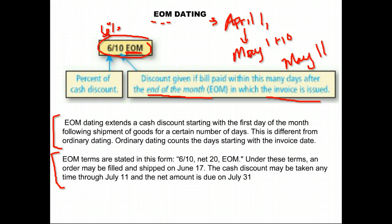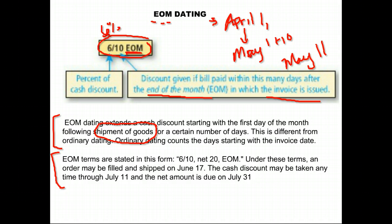End of month dating extends a cash discount, giving you more time starting within the first day of the month following the shipment of goods for a certain number of days. It's different from ordinary dating because ordinary dating counts days starting with the invoice date. EOM starts from when the goods are shipped, and you have that whole month cleared plus however many days after the end of that month.